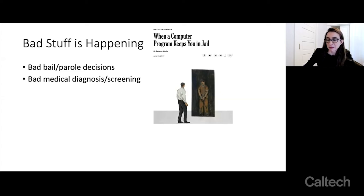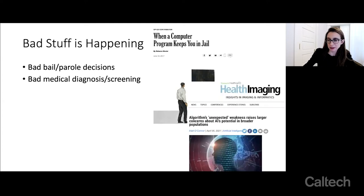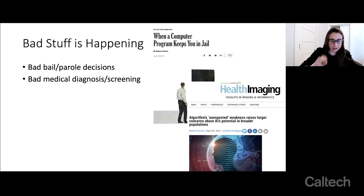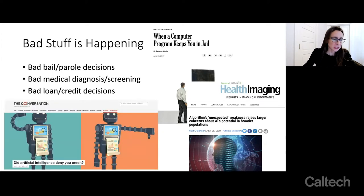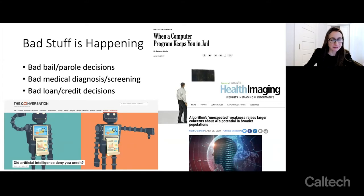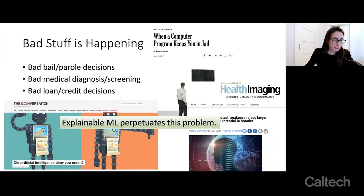There are bad medical diagnosis and screening problems. This article, which just came out in April, is about the fact that FDA-approved machine learning models, when people brought them into real practice, didn't behave the way they were behaving before. They tried them in the real world and they just didn't work as well, and no one knows why. There are also bad credit and loan decisions being made based on factors that are not allowed, sometimes based on faulty information.